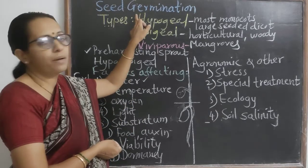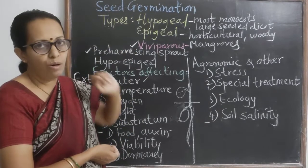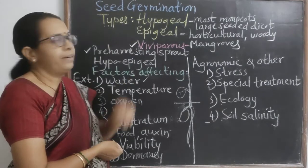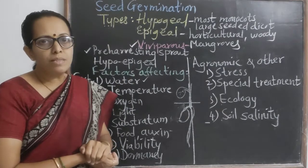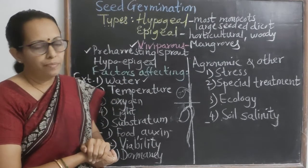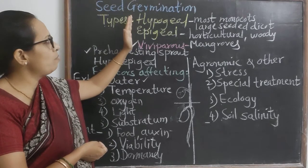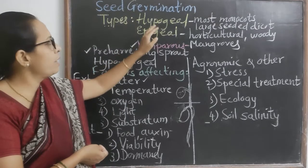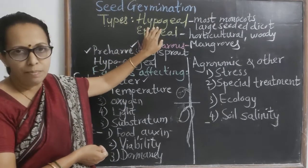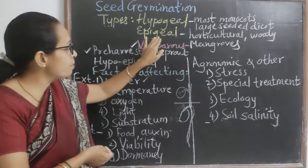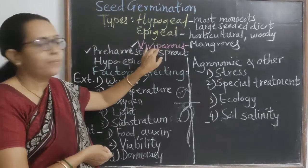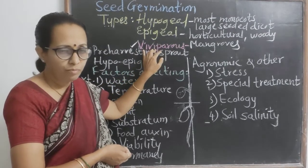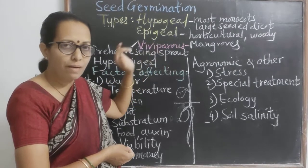We call it the germination of the seed. Broadly speaking, there are different types of germination: hypogeal germination, epigeal germination, and viviparous germination. We will see them one by one.